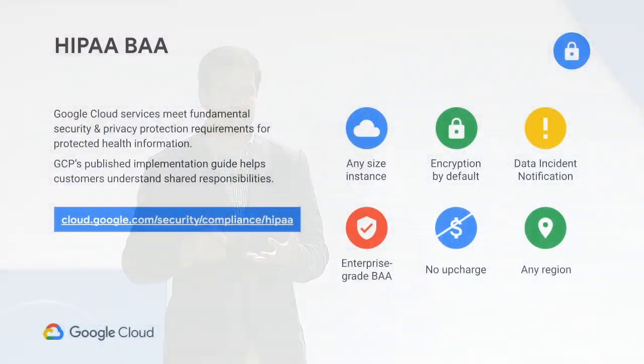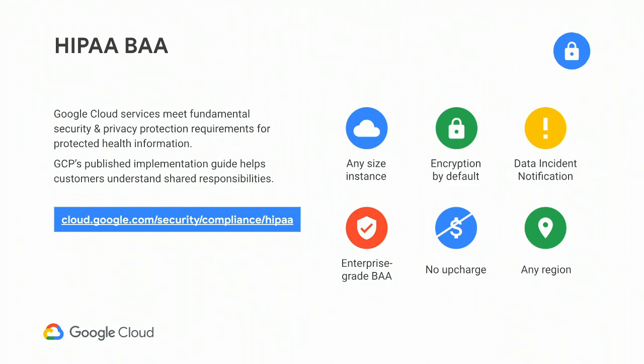It's important to talk about the HIPAA BAA — the business associate agreement — when talking about HIPAA. The BAA is the contract that formalizes the requirements between the service provider, the business associate, and the covered entity, generally the insurance plan, the provider system, or the healthcare information clearinghouse. This BAA formalizes the relationship and says both parties agree that HIPAA data is being exchanged in this contract, and here are the security requirements that govern the use, protection, and transmission of that healthcare data. Google Cloud is one of the few providers that offers a rigorous enterprise-grade BAA that covers a large number of GCP services.